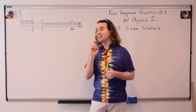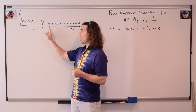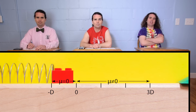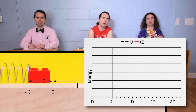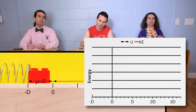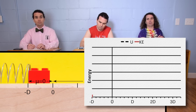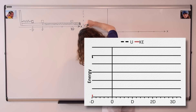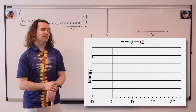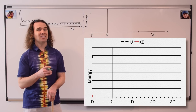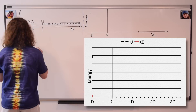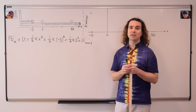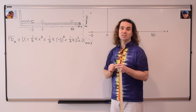Please tell me about the elastic potential energy stored in the spring and the kinetic energy of the block when the spring is fully compressed at the very beginning. When the block is at x equals negative D, it is at rest, so its velocity is zero, therefore its kinetic energy equals zero. The compression of the spring is at its maximum magnitude D. Therefore, the elastic potential energy is at its maximum value. The equation for elastic potential energy is one-half times the spring constant times the displacement from the equilibrium position squared. Therefore, the value of the initial and maximum elastic potential energy is one-half times the spring constant times capital D squared.